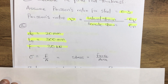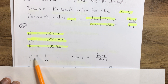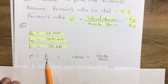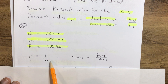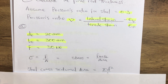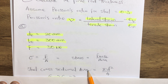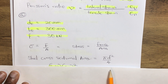To find our applied tensile stress, we use the stress formula: sigma equals force over area. To find the cross-sectional area of the steel rod, we use the formula: A equals pi d squared over 4.